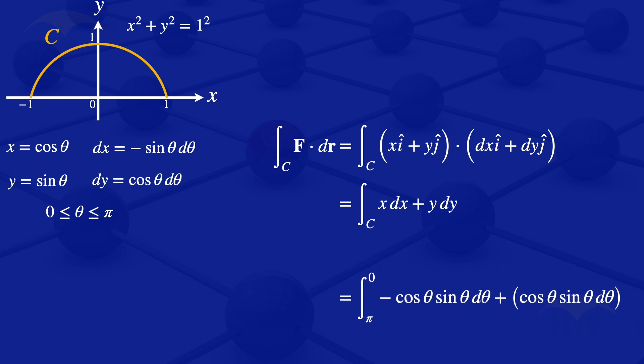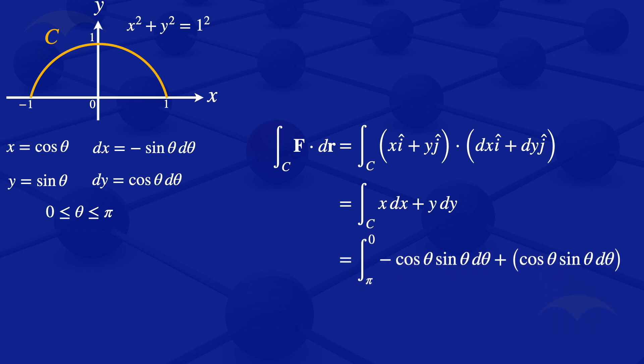We have that integral, but minus cosine theta sine theta dθ plus cosine theta sine theta dθ gives us zero. So the integral of f·dr along the curve C equals zero.